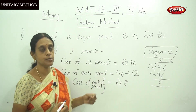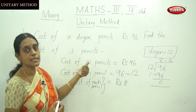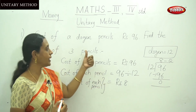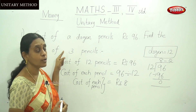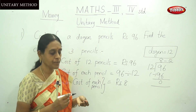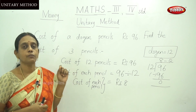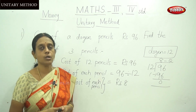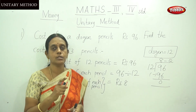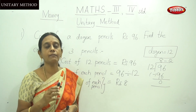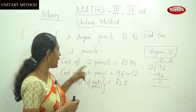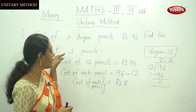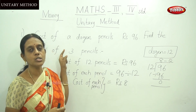Now find the cost of 3 pencils. The cost of each pencil is 8 rupees, so we have to find the cost of 3 pencils. To find the cost of many items, you multiply. To find the cost of each item, you divide. We have found the cost of each pencil; now we find the cost of 3 pencils.